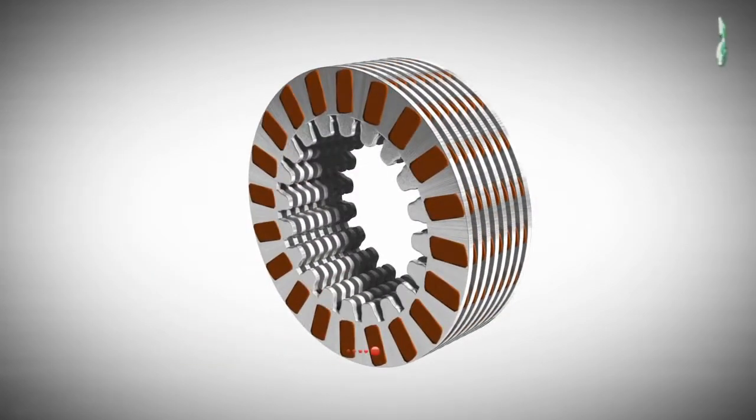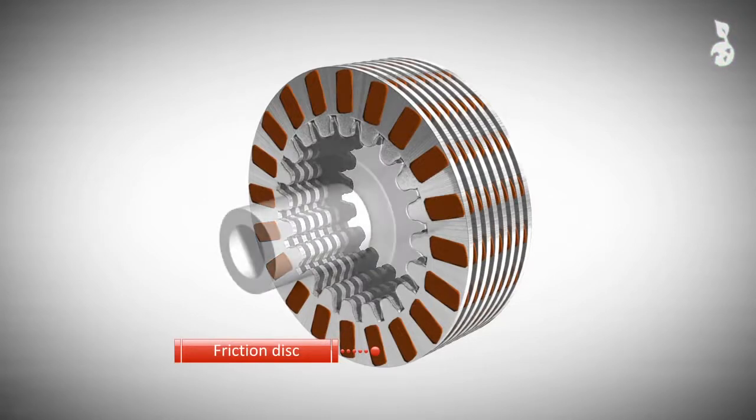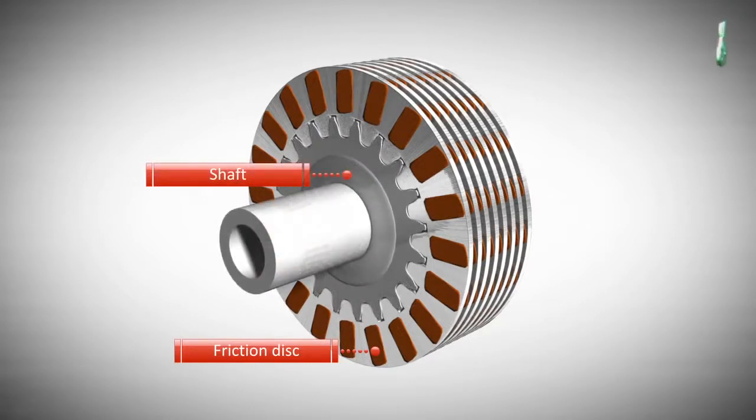A multi-plate clutch is composed of a series of friction disks that are connected to a shaft. The friction disks have friction surfaces to increase the coefficient of friction.